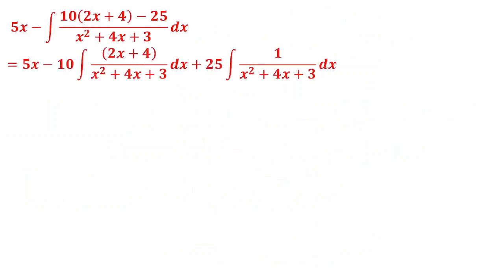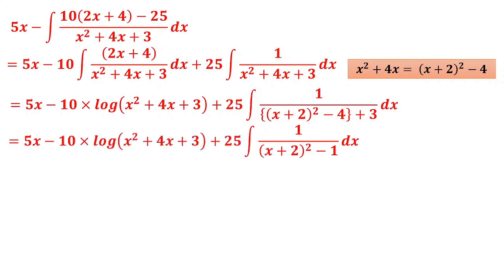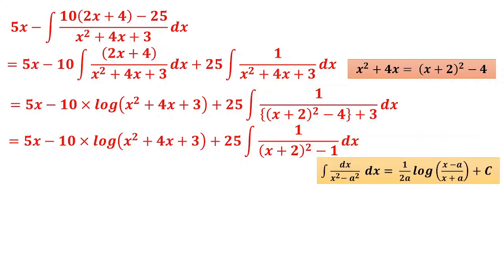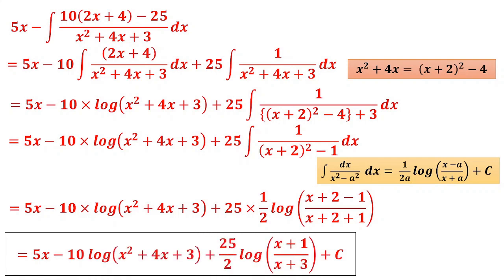Put in the integral: −∫10·(2x+4)/(x²+4x+3)dx + ∫25/(x²+4x+3)dx. First integral is −10·log(x²+4x+3). For the second, write x²+4x = (x+2)²−4, so x²+4x+3 = (x+2)²−1. Apply ∫dx/(x²−a²) = (1/2a)·log|(x−a)/(x+a)| with a=1, x replaced by x+2. Final answer: 5x − 10·log(x²+4x+3) + (25/2)·log|(x+1)/(x+3)| + c.